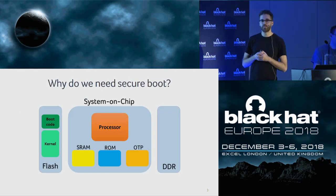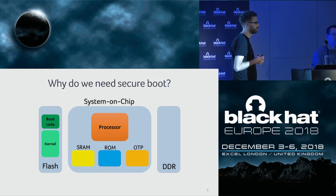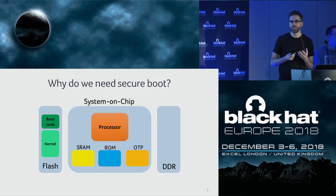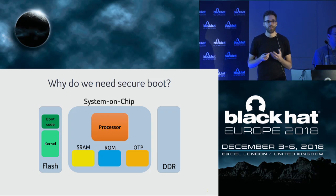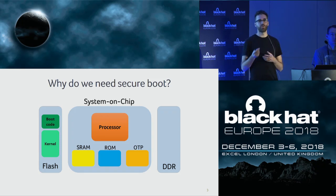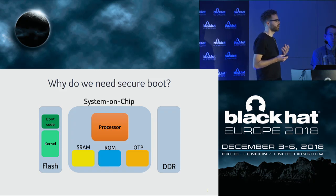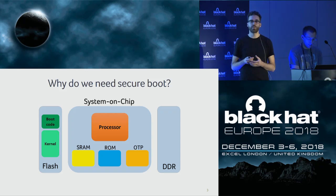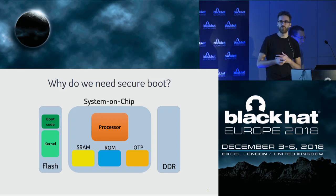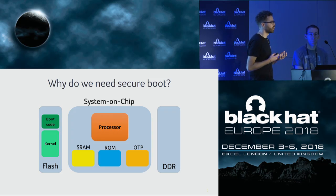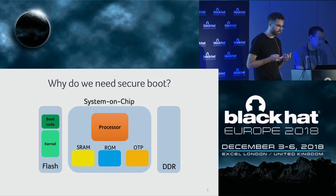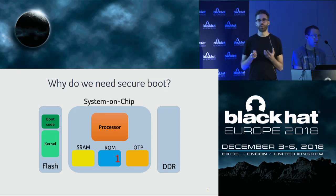Why are there secure devices with Secure Boot? If you look at a generalized representation of an embedded device, we see that it is typically designed around a system-on-chip. A system-on-chip includes a processor to execute software and several memories used for various purposes. There are also external components — for example, a flash chip to store code and data when the device is turned off, and a DDR chip used to execute software while the device is being initialized.